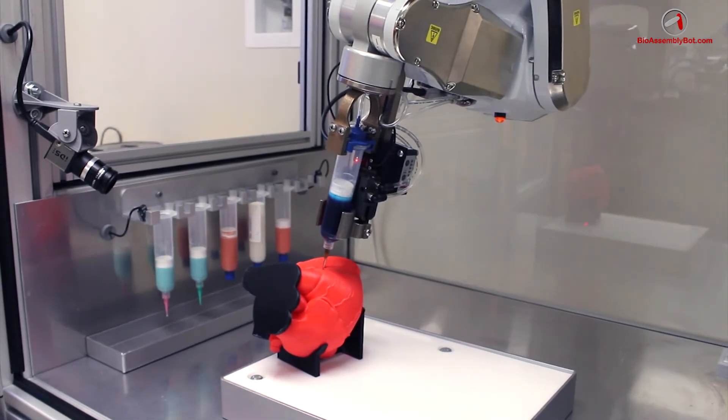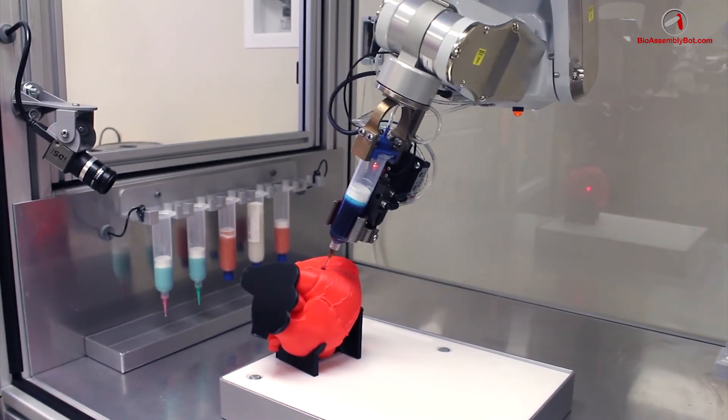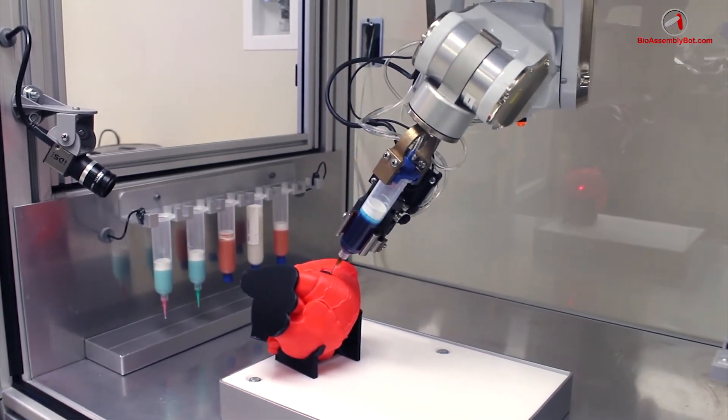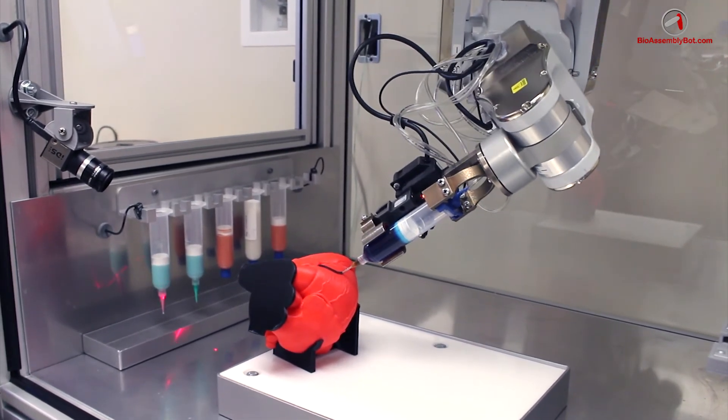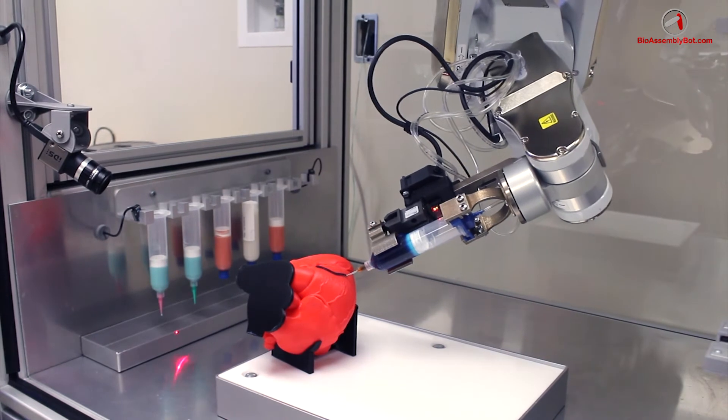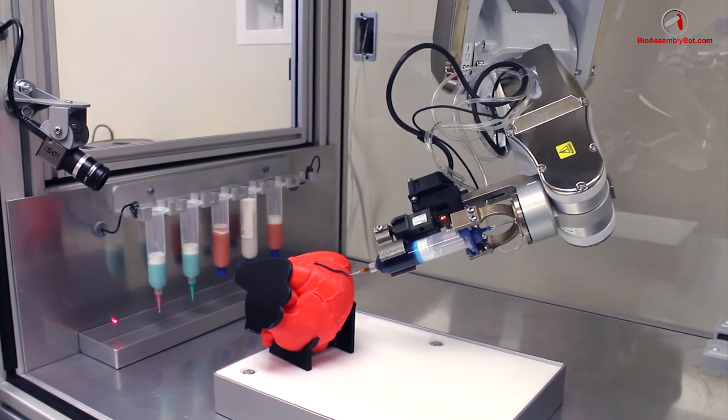Once the print is confirmed, the robot then begins working off of a pre-constructed heart model, and the vascular tree is now added to the surface of this heart model using the BioAssemblyBot.